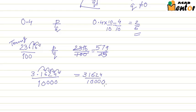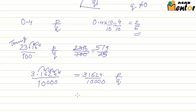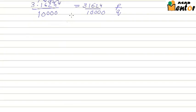Now terminating decimals are fairly simple to represent in the form of P by Q. How do you represent the non-terminating ones but the repeating ones? For example, let us take 0.6666 and it goes on forever.